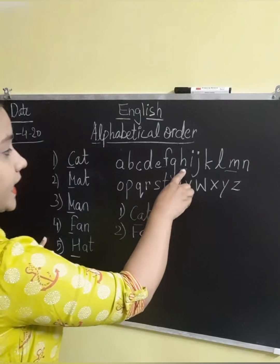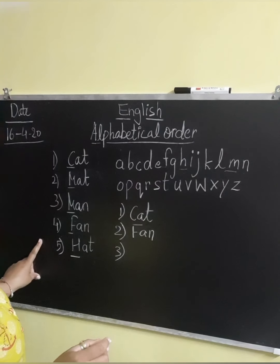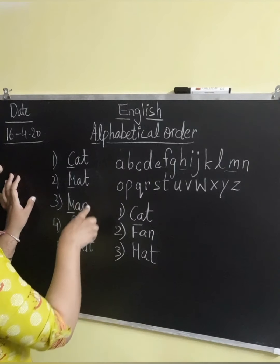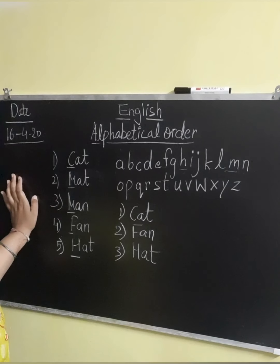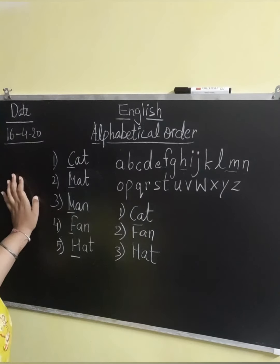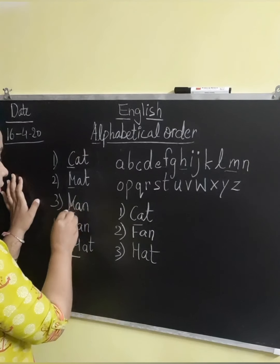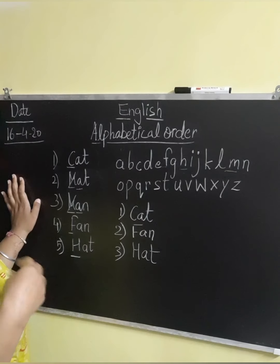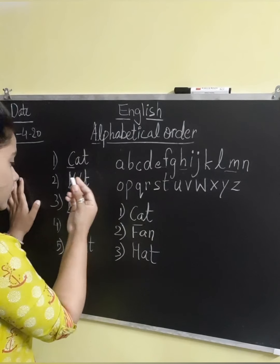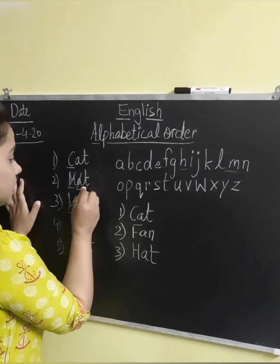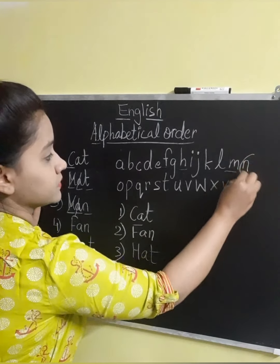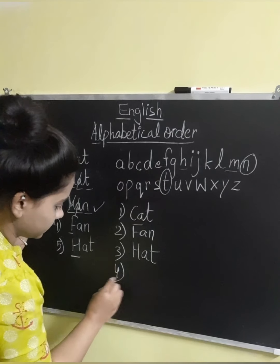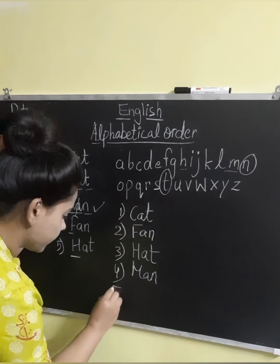Now the third one is H because it is coming after F. So we are going to write hat on the third number. And for the fourth one, now you have to see this — mat and man. Both are starting from the M letter. So we will apply a formula: we will ignore the first letter and move on to the next letter, which is A in both. Again the letters are the same. So we keep moving until we get different letters. After M and A, the last letter is T here and N here. N comes before T in the alphabet, so man comes before mat.